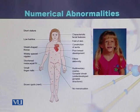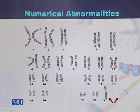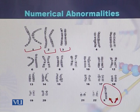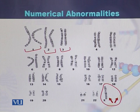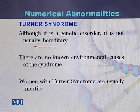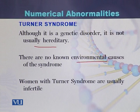This is a typical picture of a girl with Turner syndrome. In Turner syndrome, all chromosomes are in homologous pairs, but there is loss of one of the X chromosomes. Females should have two X chromosomes, but in Turner syndrome one X chromosome has been lost. Turner syndrome is a genetic disorder that is usually not hereditary and does not transfer to the next generation. There are no known environmental causes, and women with Turner syndrome are usually infertile.